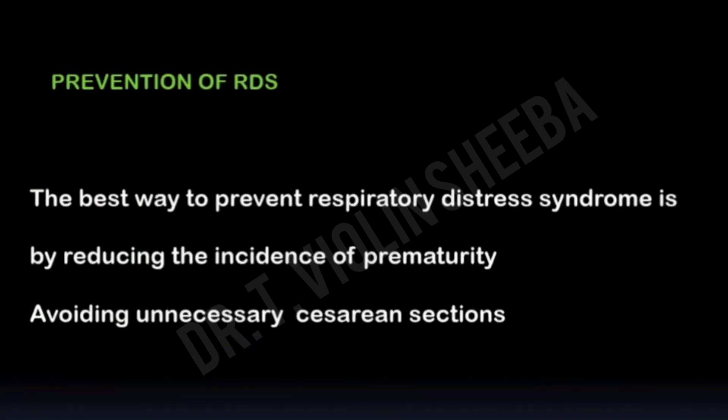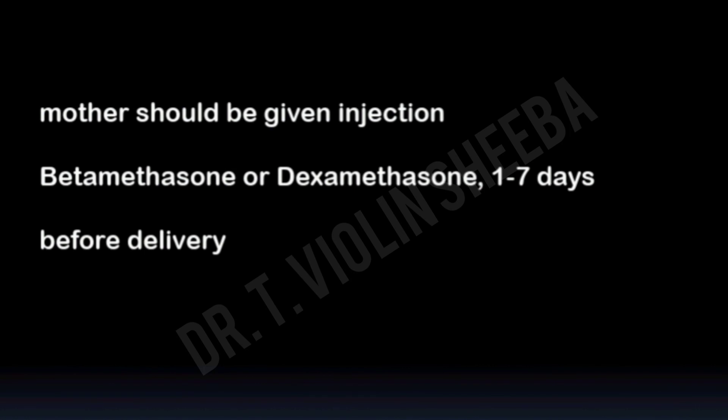Regarding prevention of RDS: the best way to prevent RDS is by reducing the incidence of prematurity through appropriate management of high-risk pregnancy and by avoiding unnecessary or poorly timed caesarean sections. If the pregnancy cannot be maintained to term, the mother should be given an injection of betamethasone 1 to 7 days before delivery, which helps to improve the maturation of the fetal lungs.